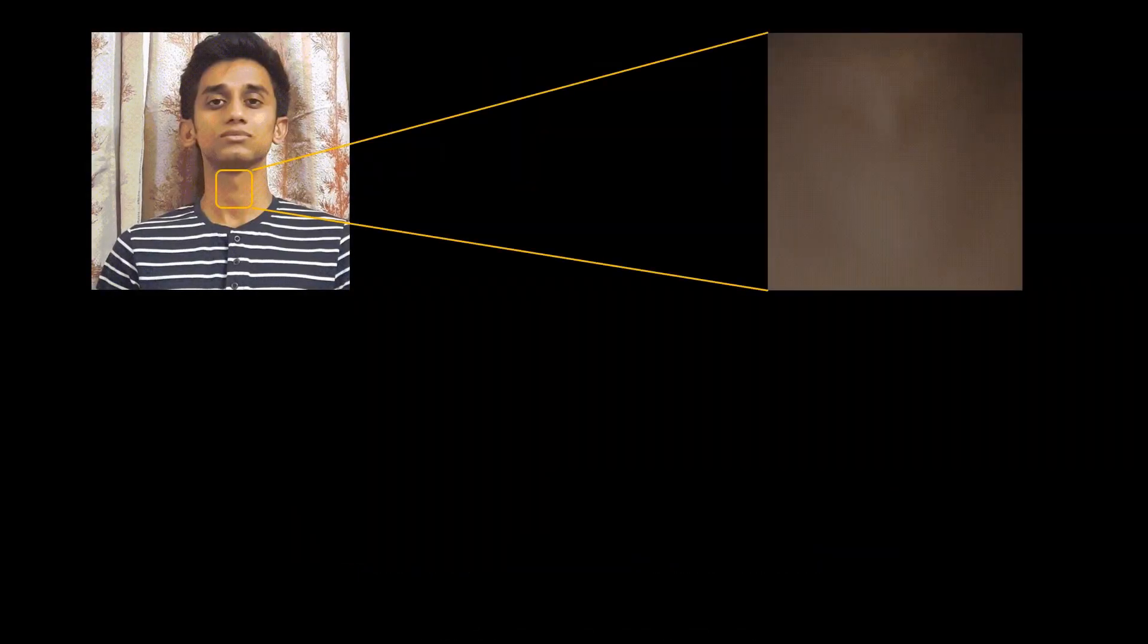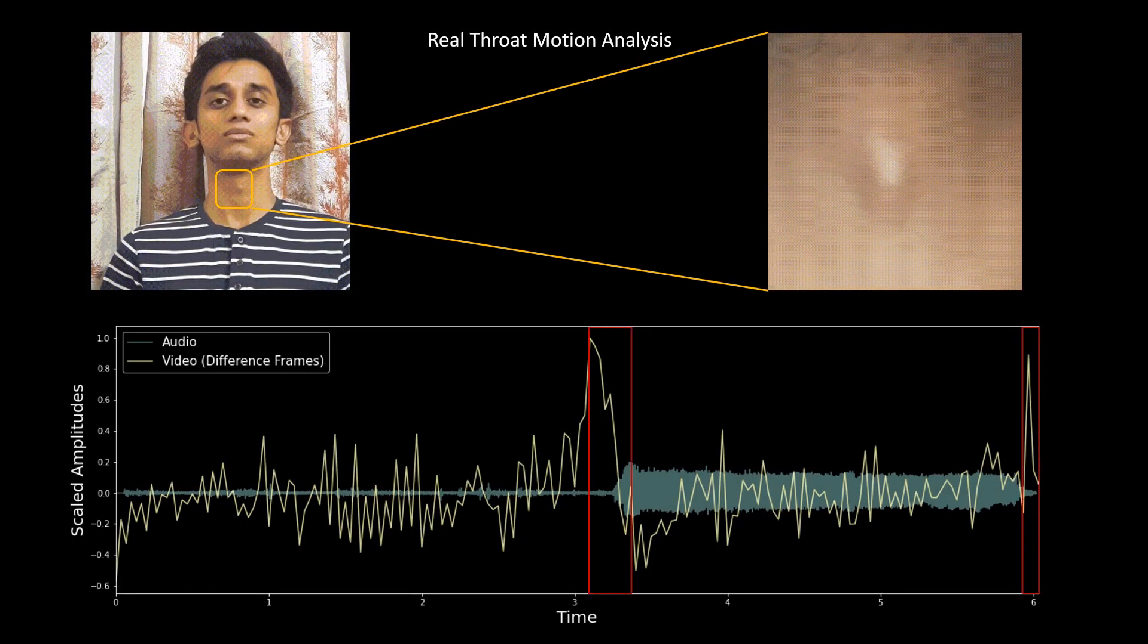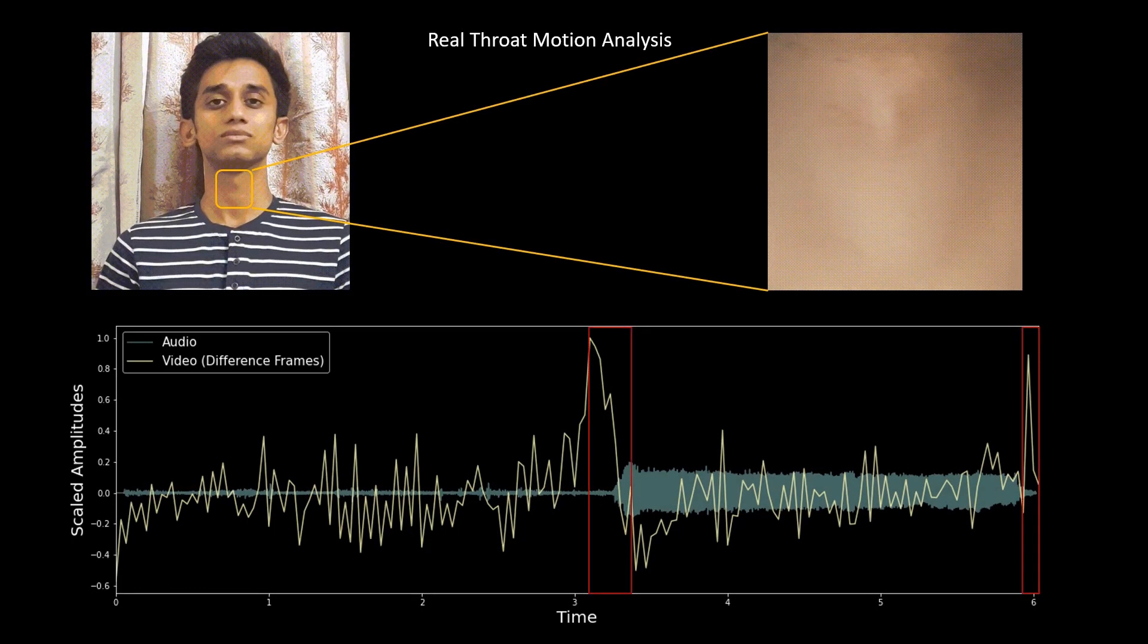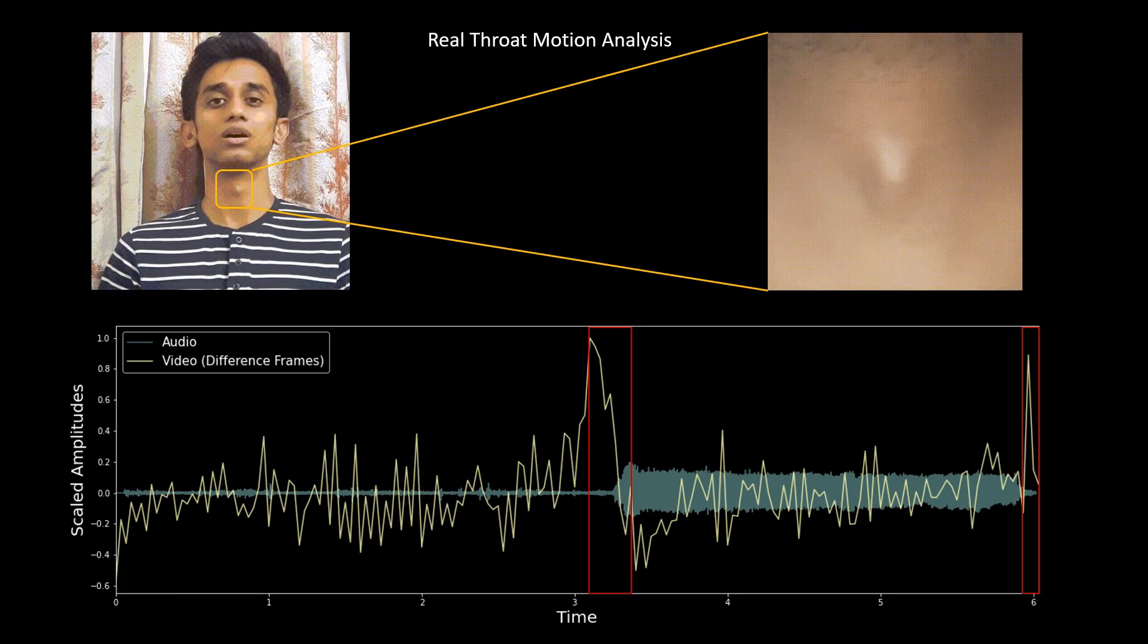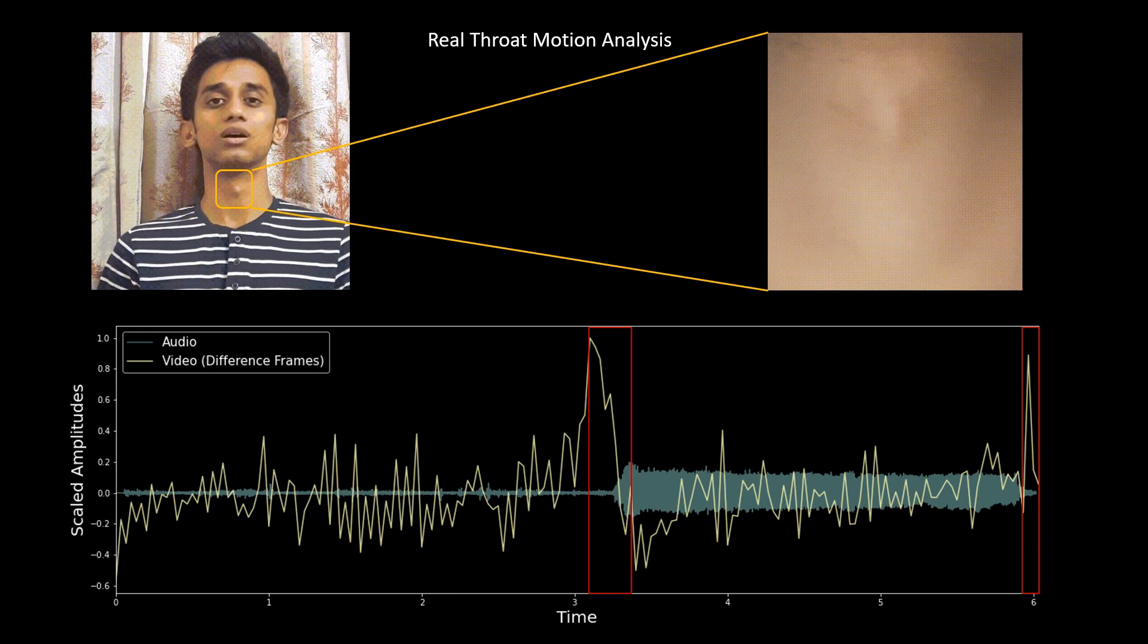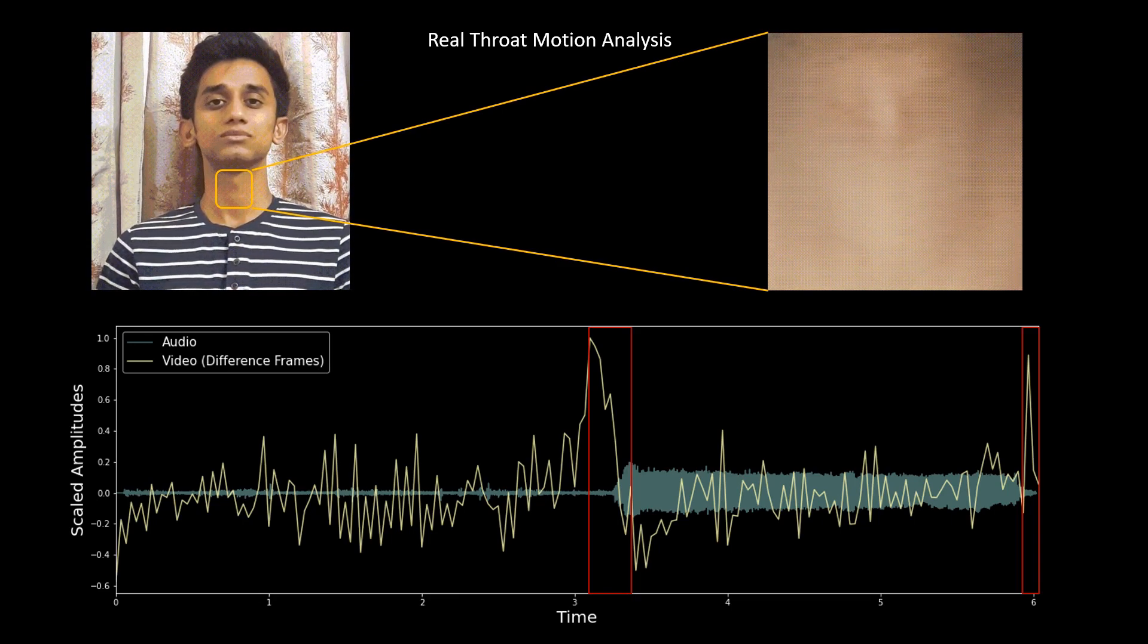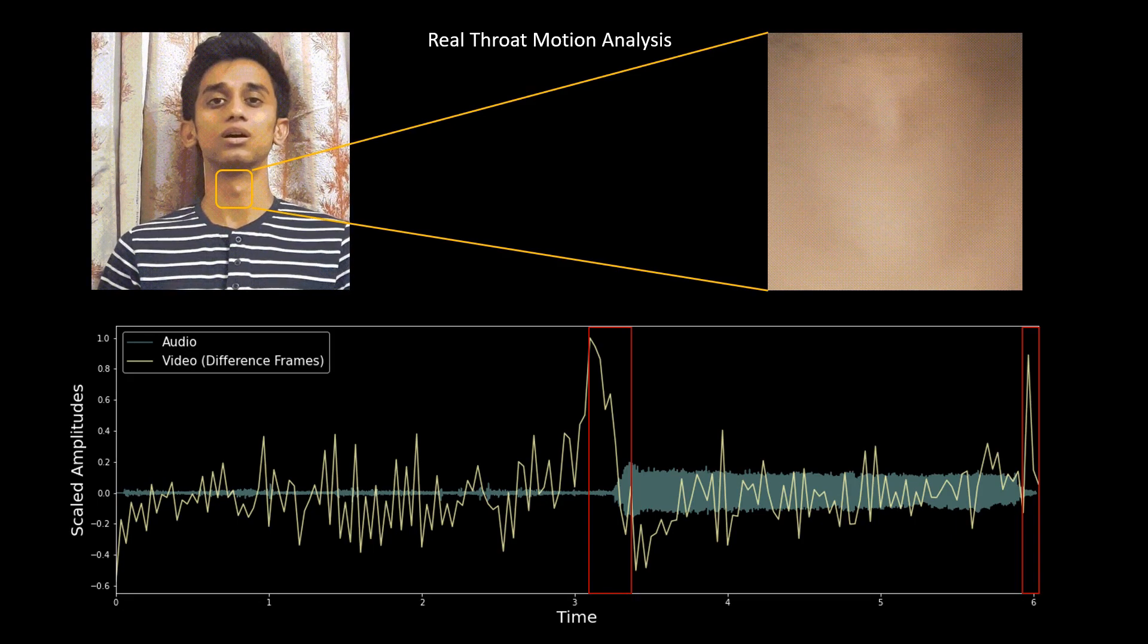In this illustration, the throat region is extracted and the successive difference in the frames is observed via high-pass filtering. On relatively scaling the amplitudes to the corresponding speech signal, it was observed that the peaks in the relative difference between frames occur when there is a transition in voice activity. This can therefore be used as an audio-visual authenticator by correlating voice activity and throat motion.